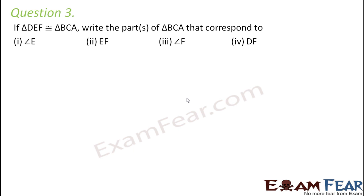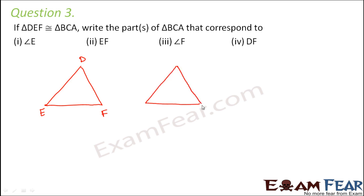Question number three: if triangle DEF is congruent to triangle BCA, write the parts of triangle BCA that correspond to given parts. Let us first draw these triangles. Triangle DEF: B corresponds to D, C corresponds to E, and A corresponds to F. So the second triangle BCA is drawn with those labels accordingly.